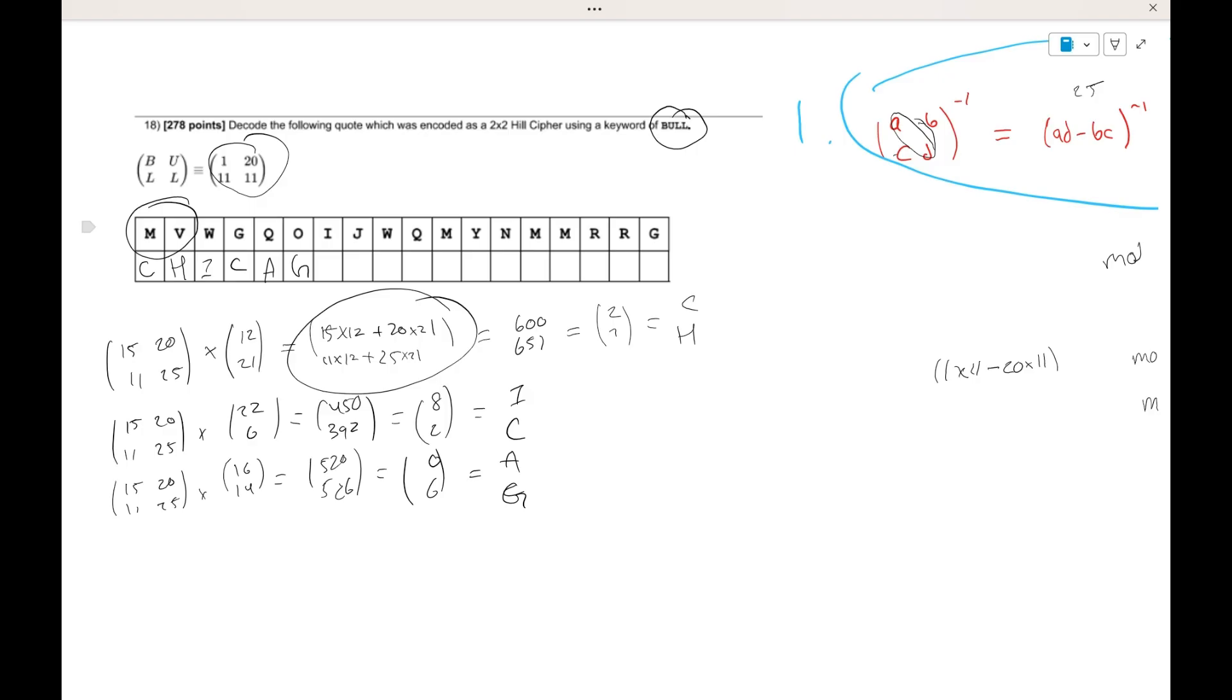So you can kind of see it's Chicago something probably. But nonetheless, we're going to keep going. So now we have I and J. We're going to do 15, 20, 11, 25. I and J is equal to 8 and 9. If we multiply it out, you get 300 over 313. If we do the mod 26, you get 4 and 1. And that means it's an O and a B. So Chicago B. If we keep going, we're going to get 15, 20, 11, 25 times W and Q, which is 22 and 16. If we multiply it out, we get 650 over 642 mod 26. We get 0 and 18. It ends up being A and S.